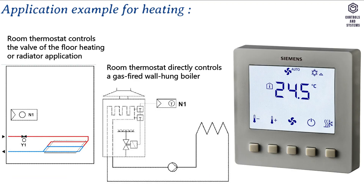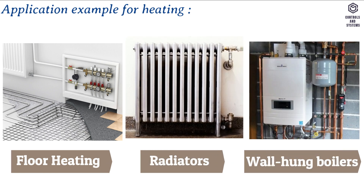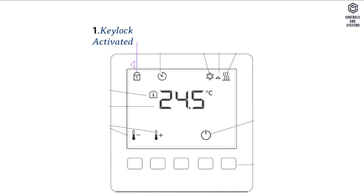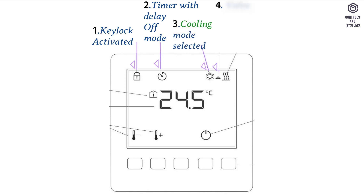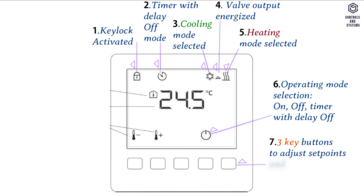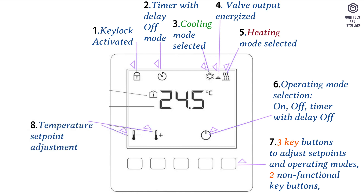Application examples for heating include floor heating, radiators, and wall-hung boilers. Operating and setting elements: (1) key lock activated; (2) timer with delay-off mode; (3) cooling mode selected; (4) valve output energized; (5) heating mode selected; (6) operating mode selection — on, off, or timer with delay-off; (7) three key buttons to adjust set points and operating modes, while two non-functional key buttons are required for parameter mode and other access; (8) temperature set point adjustment; (9) temperature value; (10) room temperature.